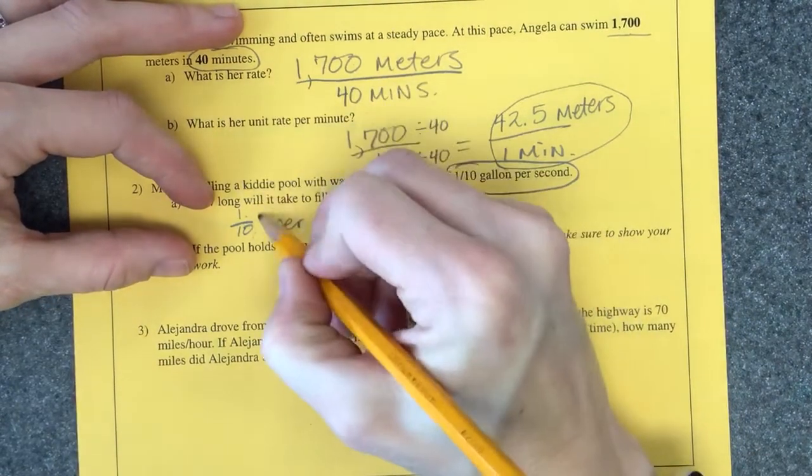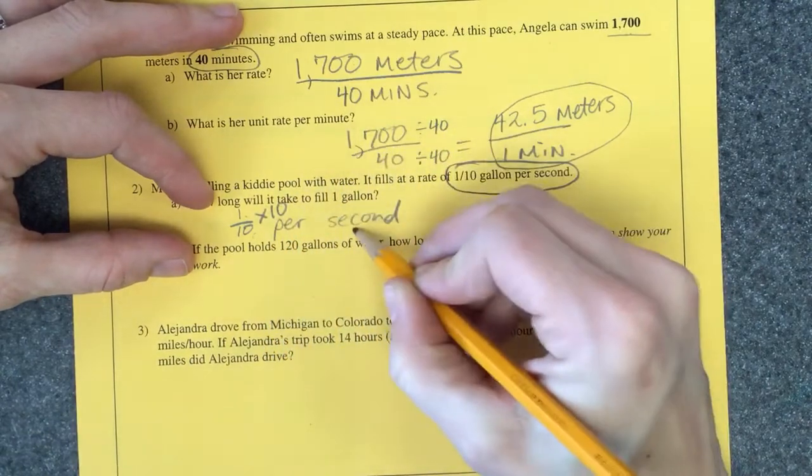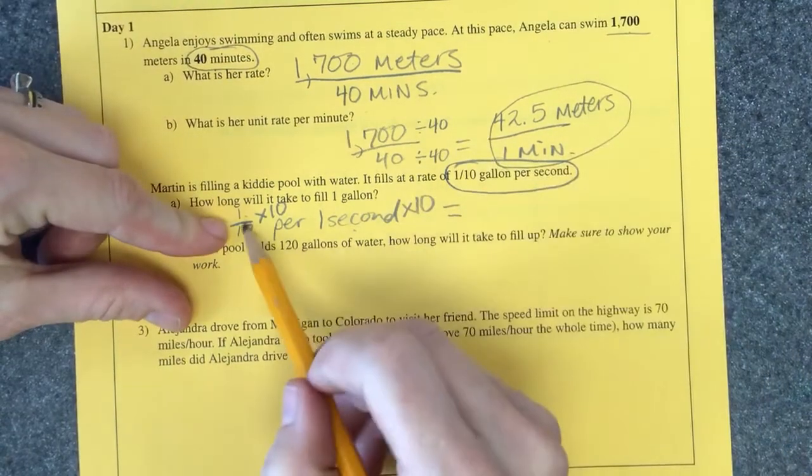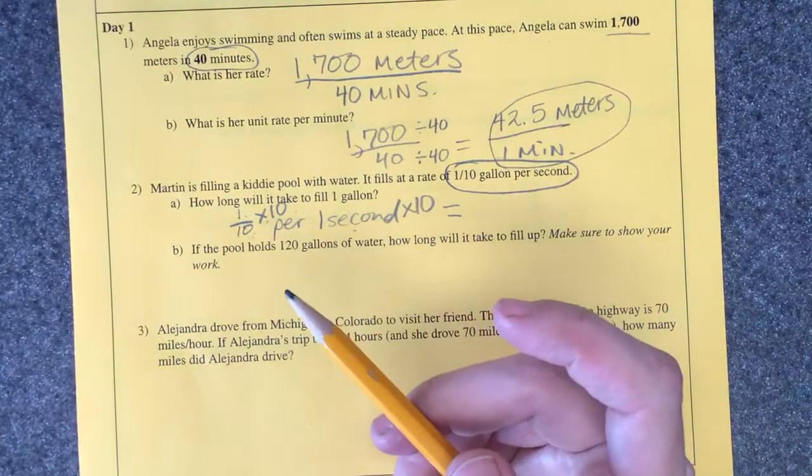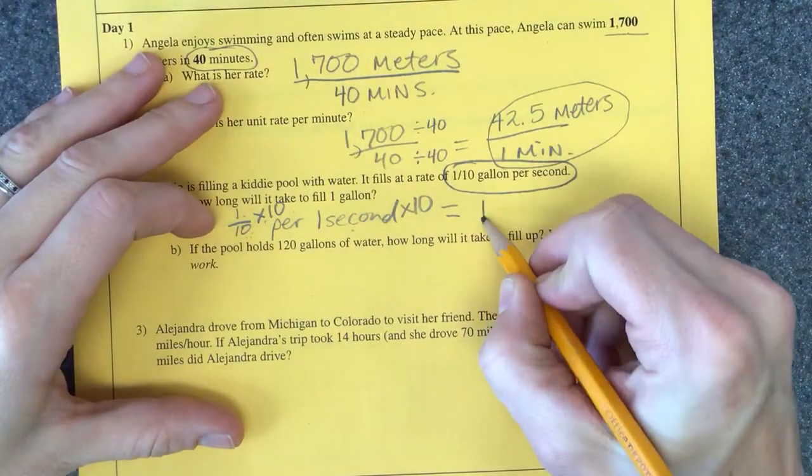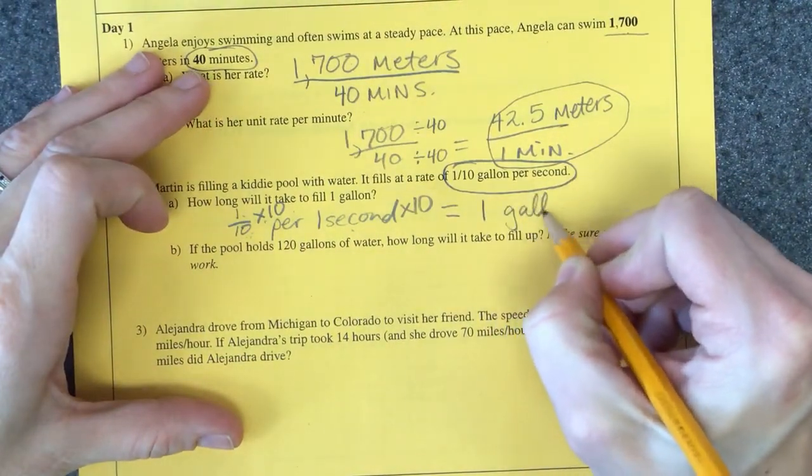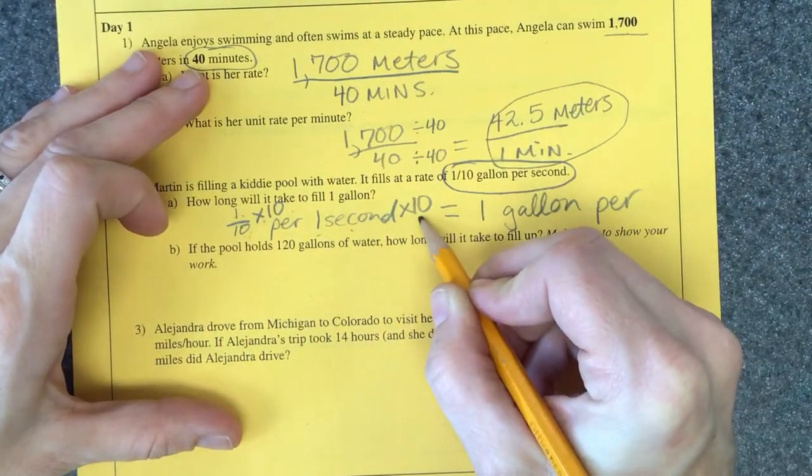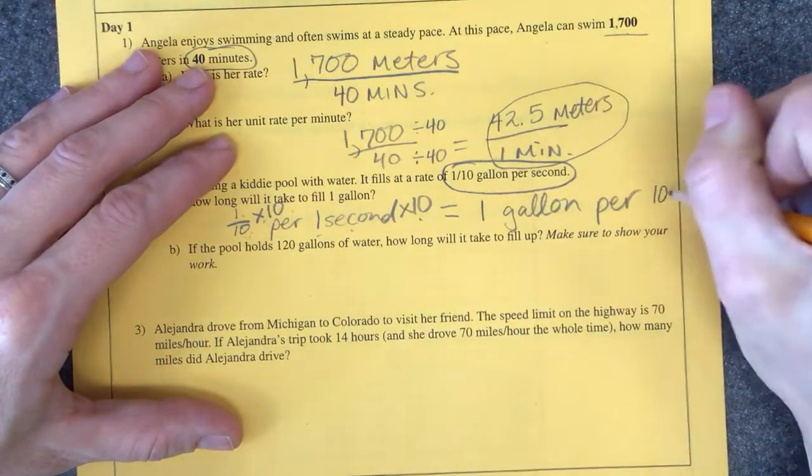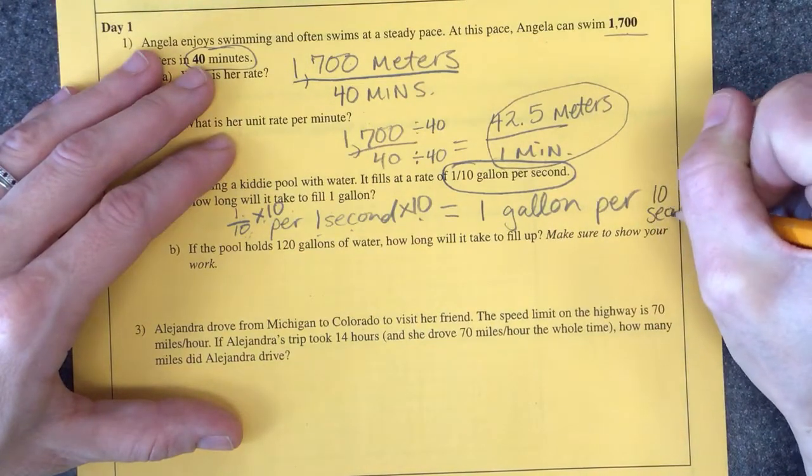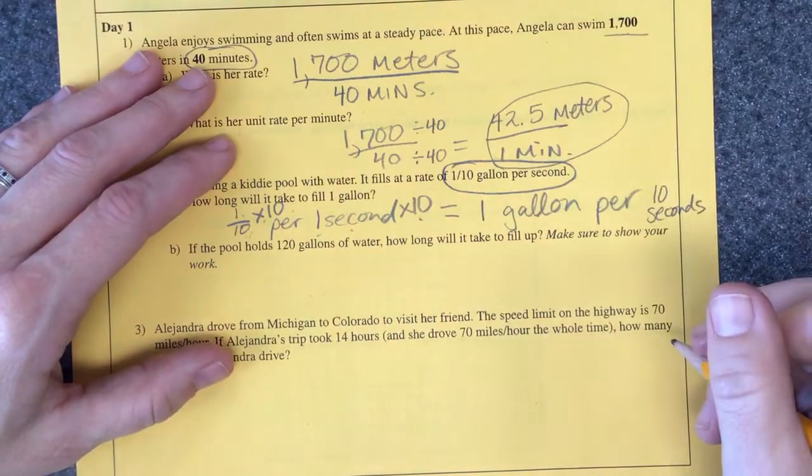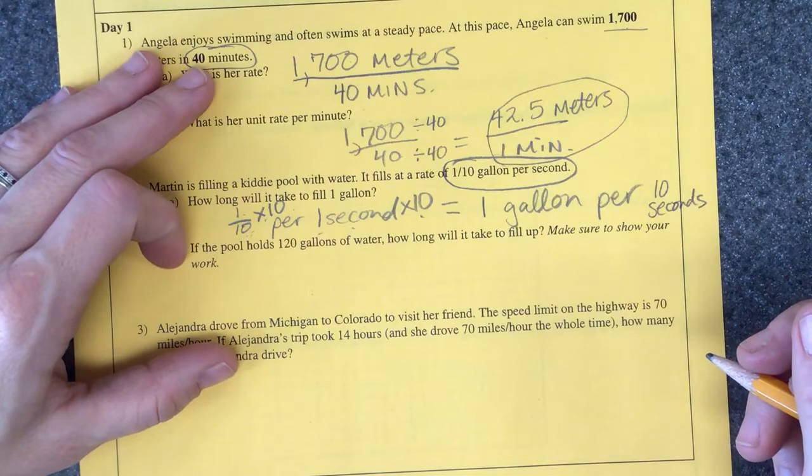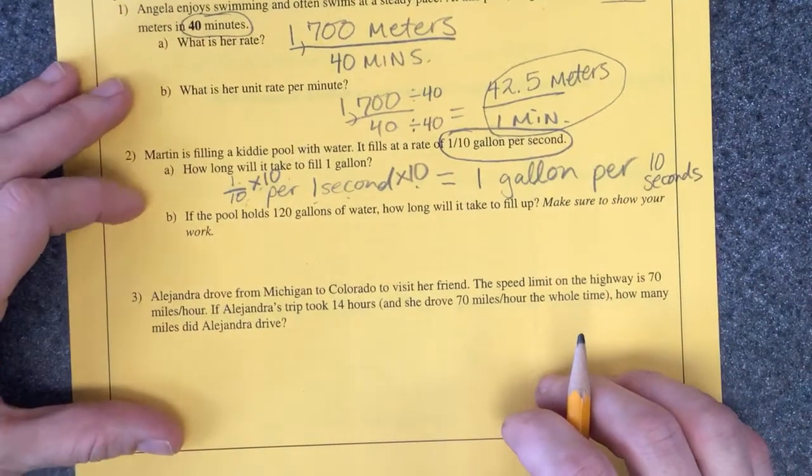10. Thanks for coming to school today. We're going to multiply this by 10 and this by 10. One-tenth times 10 is one gallon per what? One times 10 is 10. Excellent, 10 seconds. Actually that is pretty fast if it'll fill a whole gallon in 10 seconds, pretty decent.